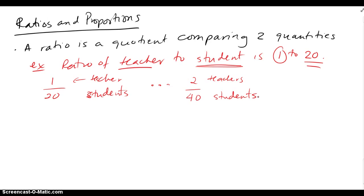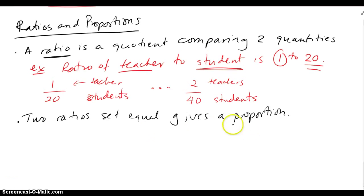And when we have two ratios set equal, we get a proportion. So again, two ratios set equal gives a proportion. For example, one teacher to 20 students would be equivalent to two teachers to 40 students.